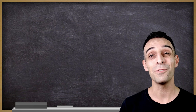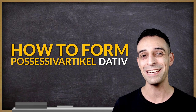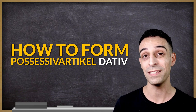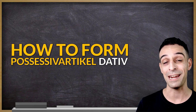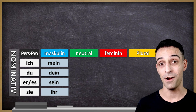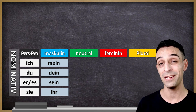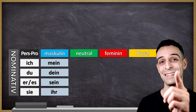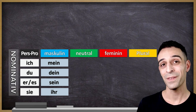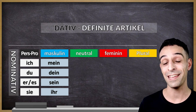I will show you how to form those possessive articles in dative case, and I will use a little trick to make it really easy for you to memorize them and never forget them again. In my table here, you can find the possessive articles in nominative case masculine: mein, dein, sein, ihr. And on top of this table, I will show you the definite articles in dative case.